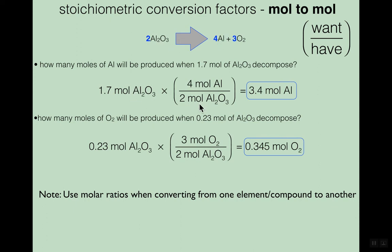The coefficients — the blue numbers — give the conversion factor: for every two moles of aluminum oxide, you get four moles of aluminum. Moles of aluminum oxide goes on the bottom to cancel, and moles of aluminum goes on top. In your calculator: 1.7 times 4 divided by 2 equals 3.4 moles of aluminum. You can also use parentheses — it's really just 1.7 times 2, which gives 3.4 moles of aluminum.